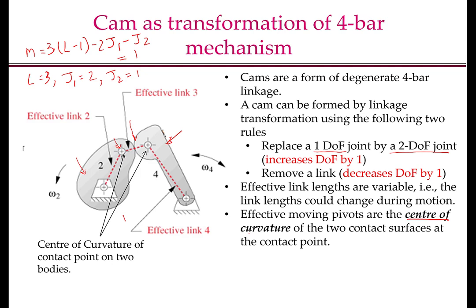However, the center of curvature changes as the contact point changes. So the moving pivots effectively change as the contact point changes. Therefore, the link lengths change as the contact points change. So at each instance, a cam can be equivalent to a 4-bar mechanism, but at different instances, these 4-bar mechanisms are different.